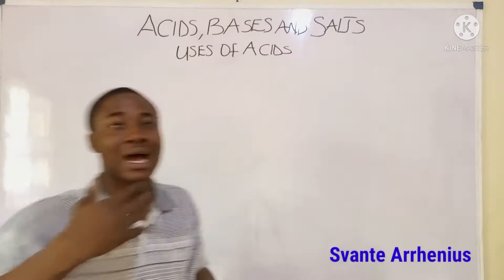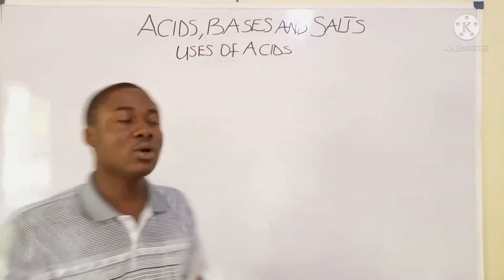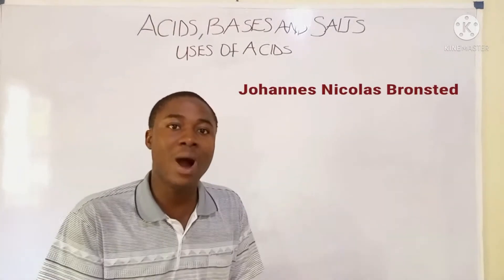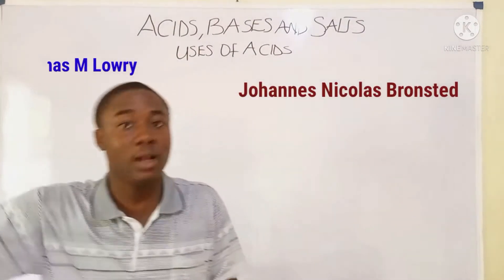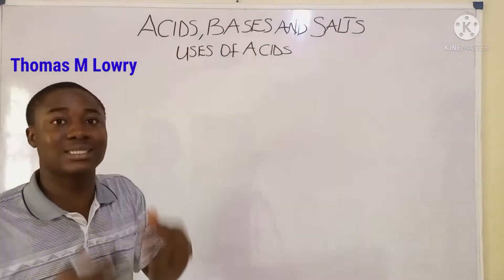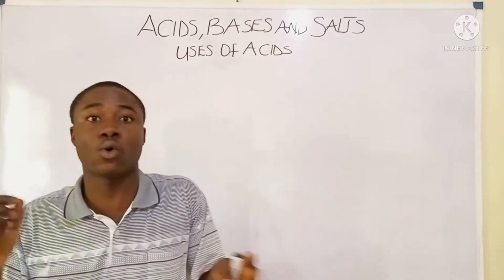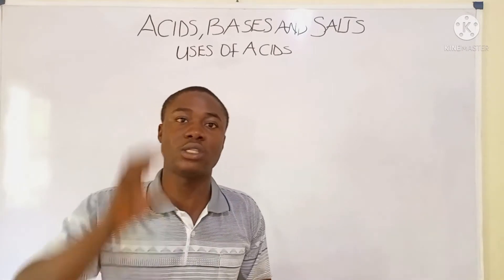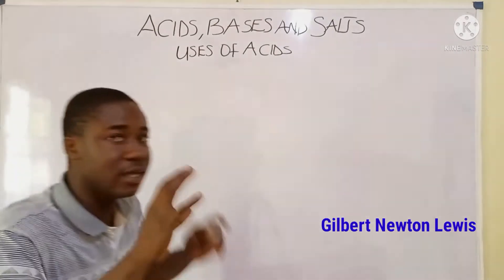The definition of acids as proton donors was given by two men called Johannes Nicolaus Brønsted and Thomas M. Lowry. The definition of acids as electron pair acceptors was given by a man called Gilbert Newton Lewis, and this definition of acid is the most encompassing.